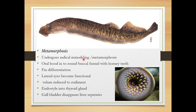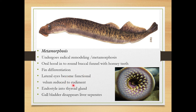After three to seven years of sedentary life, it undergoes radical remodeling and metamorphosis into an adult Petromyzon. The oral hood forms into a round buccal funnel with horny teeth. The fin, which was previously undifferentiated, is now differentiated into dorsal, caudal, and anal fins. The lateral eyes become functional, having earlier been rudimentary.